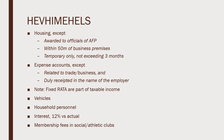The most common fringe benefits can be remembered by the mnemonic HELVIS — with S added for stock options. Housing: exempt if awarded to officials of the AFP, housing within 15 meters of business premises, or housing temporarily given not exceeding 3 months. Expense accounts: exempt if related to trade or business and duly receipted in the name of the employer. Note that fixed representation and transportation allowances are part of taxable income.